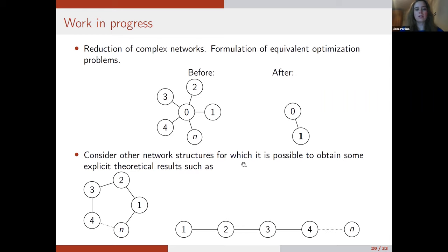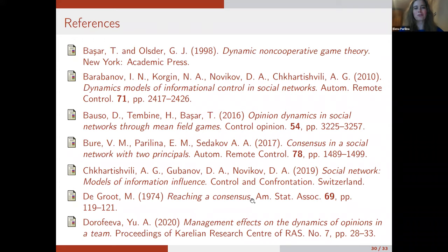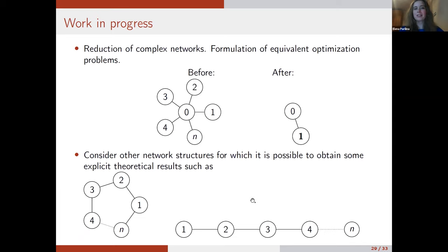We also want to obtain explicit theoretical results about consensus and control for typical network structures such as ring networks with two or three types of agents, and line networks with n agents and different types of agents with different parameters. We try to find some explicit results about consensus and the control problem. I think I'm finished — thank you, and I will be happy to answer questions.